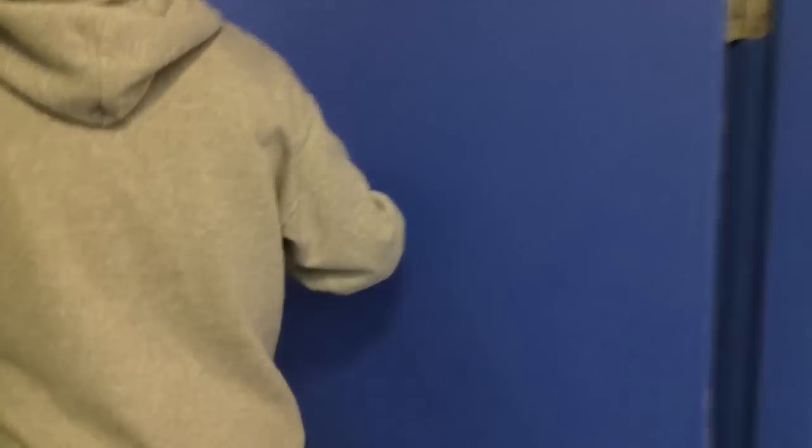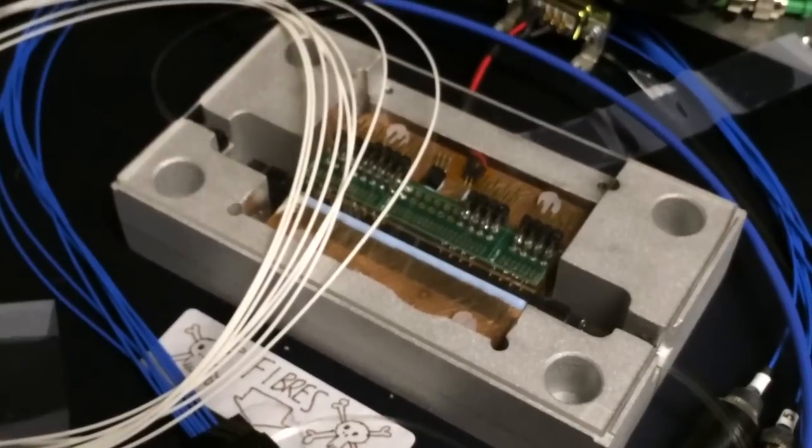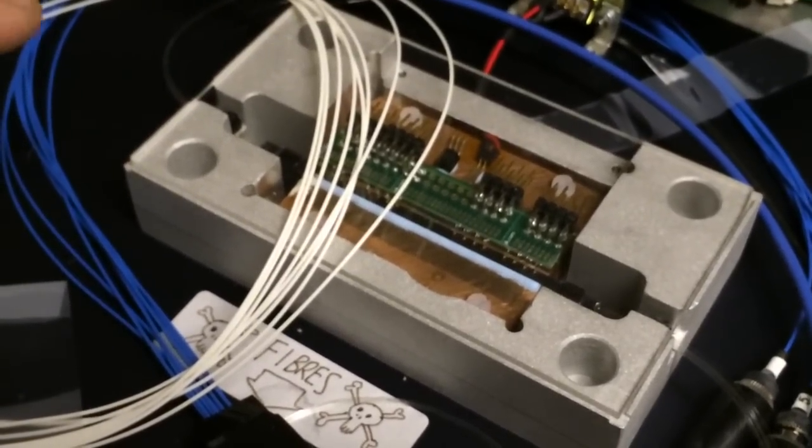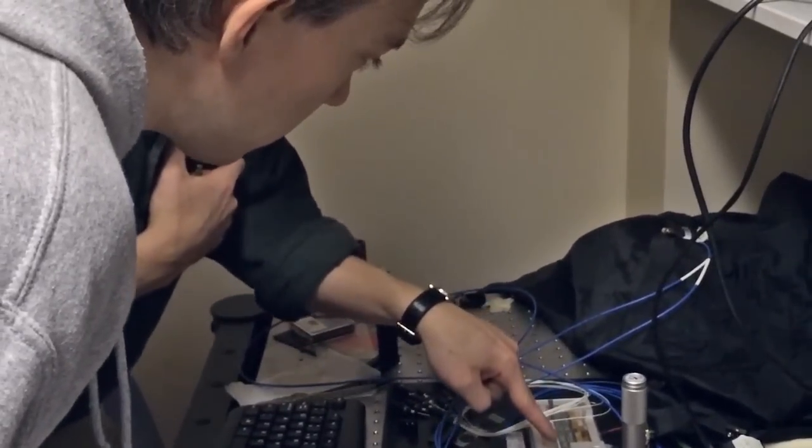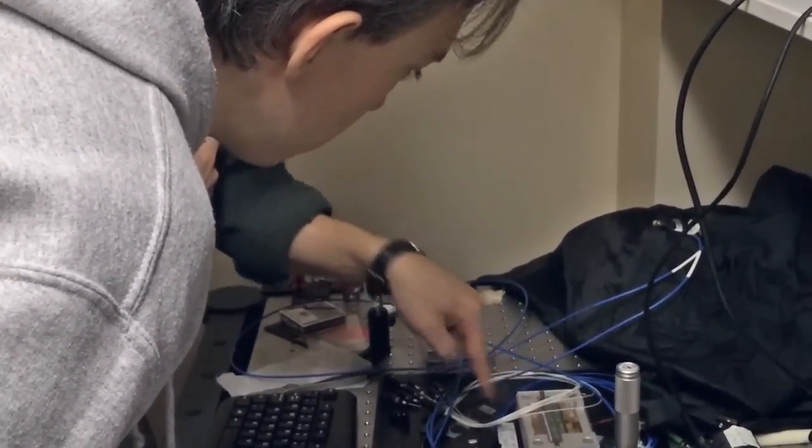So here is the quantum computer. Is that little chip there? In fact, what it really is, is just this very thin black strip in the middle. Yeah. That's actually the chip.